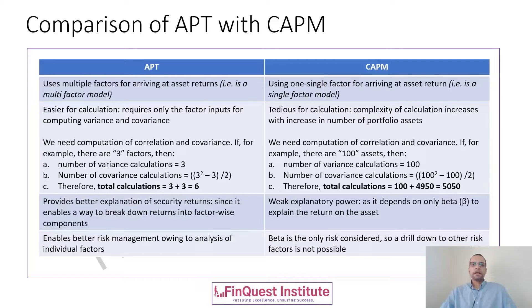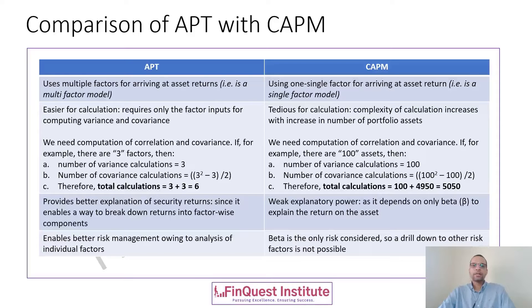From the practical calculation perspective, arbitrage pricing theory is much more efficient. From a theoretical perspective it is very sophisticated, but even from a practical implementation perspective — which is equally important, because whatever we study in theory has to be converted into a workable model — through the arbitrage pricing theory we can make our calculations far more efficient and faster.